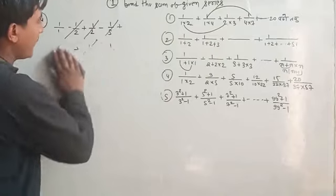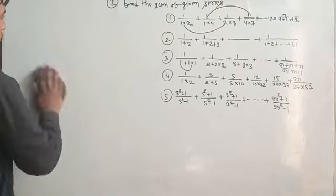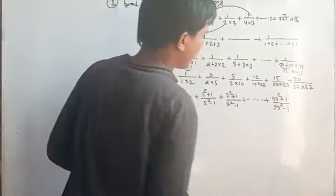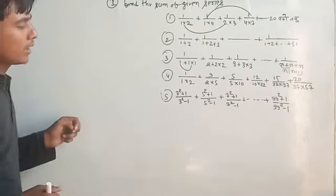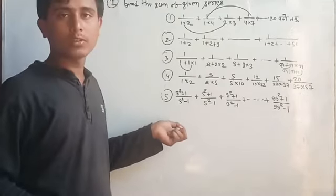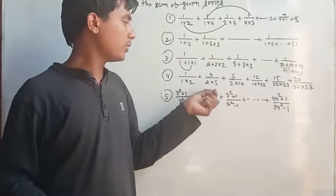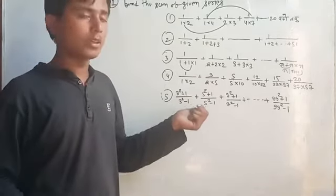After that, the 5th question you have. This is a good question. This is the 5th question. This is 3 square plus 1 upon 3 square minus 1 plus 5 square plus 1 upon 5 square minus 1.